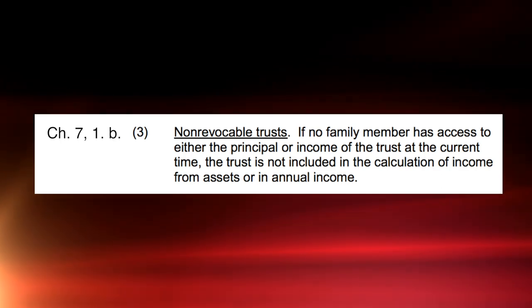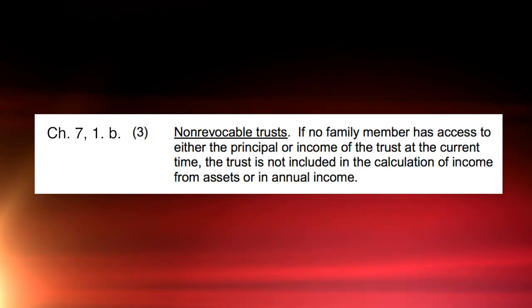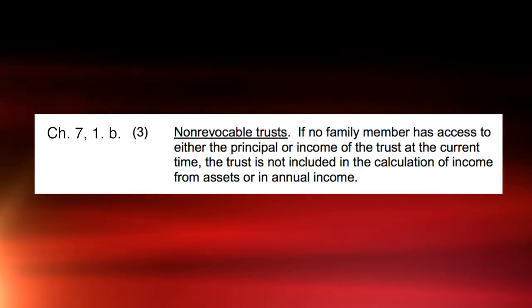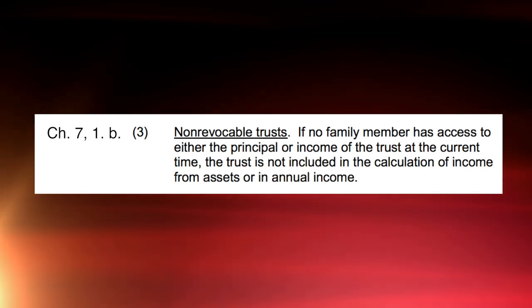Chapter 5, Paragraph 5-7-G of the HUD handbook 4350.3 deals with trust and how to calculate the income from the asset. Section G1B3 of that paragraph on non-revocable trusts states: if no family member has access to either the principal or income of the trust at the current time, the trust is not included in the calculation of income from assets or annual income.